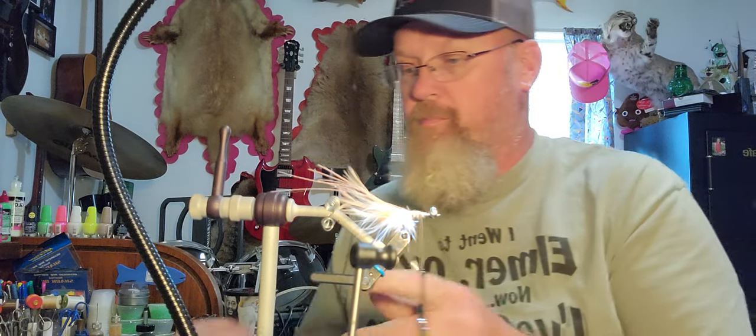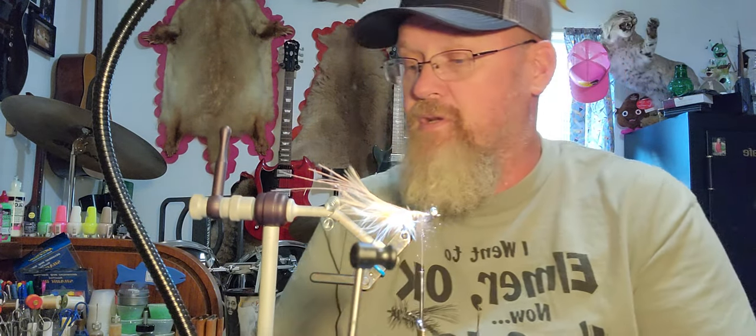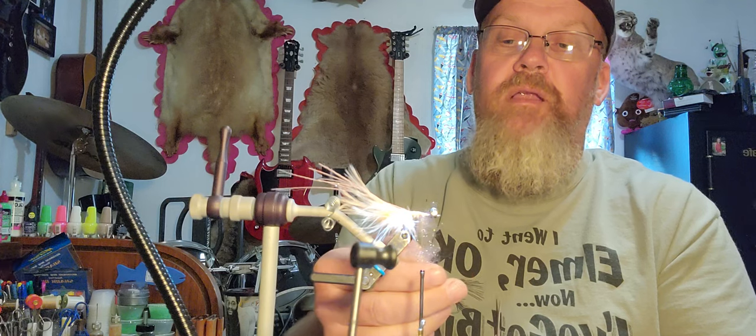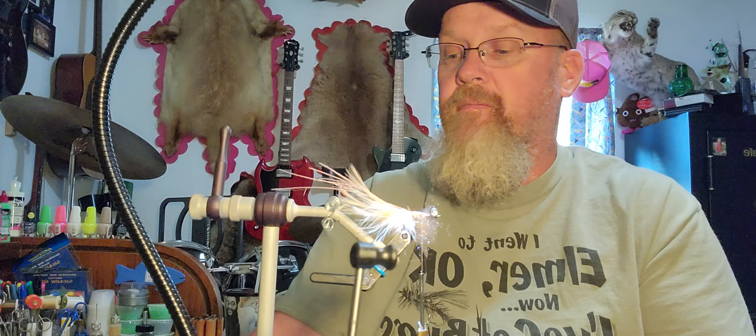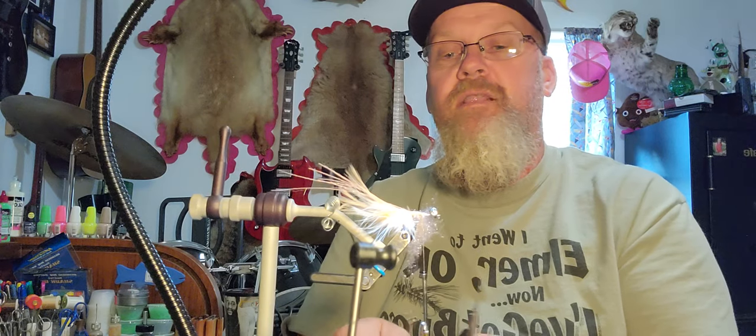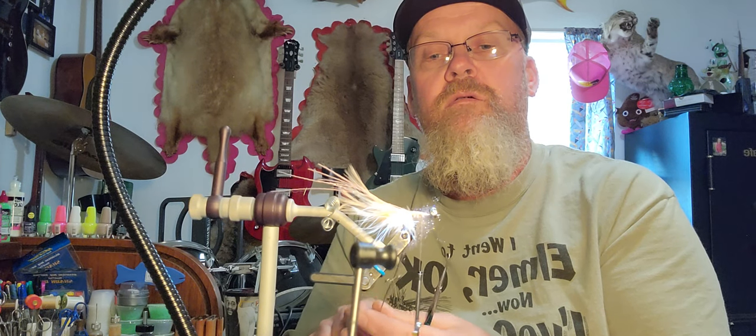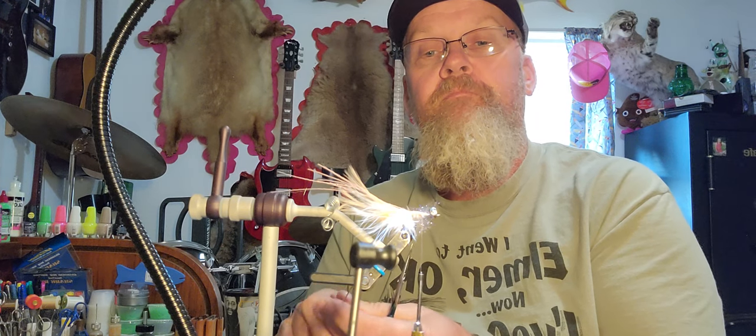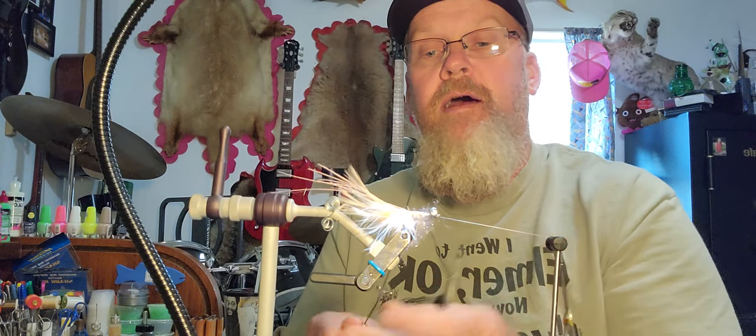I'm going to pick kind of a purplish pinkish color. This is a sparkle Chanel, I mean a sparkle dubbing, and it is a UV dubbing as well. I'm going to put that in my dubbing loop and stack it up kind of long and kind of thick. I want this thing buggy.